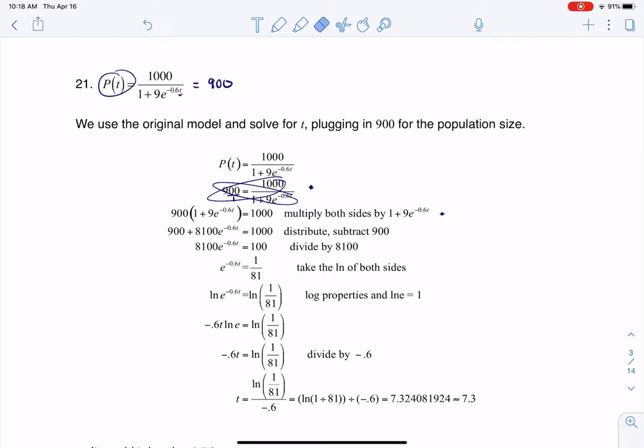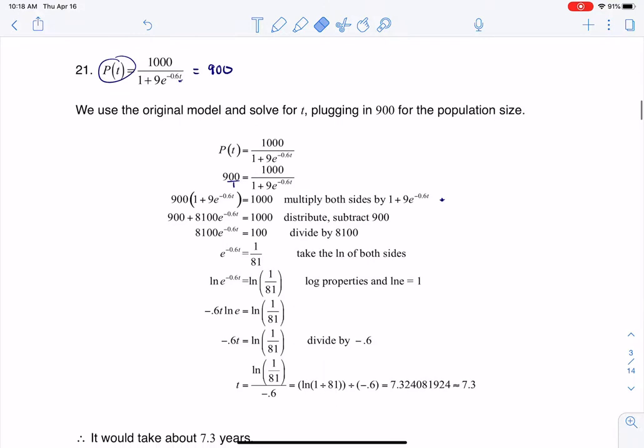and then I'm getting my variable out of the denominator. At that point you have a couple of options. The next thing I could have done is divided both sides by 900 and canceled. That would have been fine, but what I opted to do here was distribute. It's just another way to go.